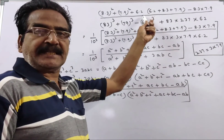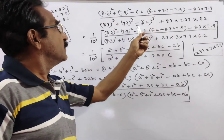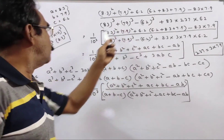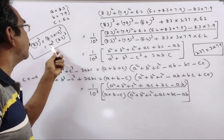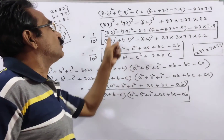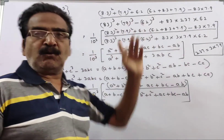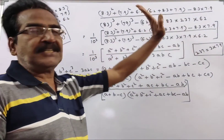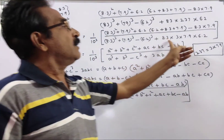Friends, this expression can be reduced. Coming to the denominator: 83 whole cube is equal to 8.3 into 10, whole cube, that is equal to 10 cube into 8.3 whole cube. So 83 whole cube can be written as 8.3 whole cube into 10 cube. Same way, 79 whole cube is equal to 7.9 whole cube into 10 cube, and 62 whole cube is equal to 6.2 whole cube into 10 cube. Here also we have 10 cube.